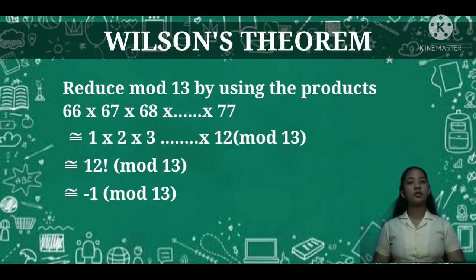Another example is to reduce mod 13 by using the product 66 × 67 × 68 × ... × 77, which is congruent to 1 × 2 × 3 × ... × 12 (mod 13).